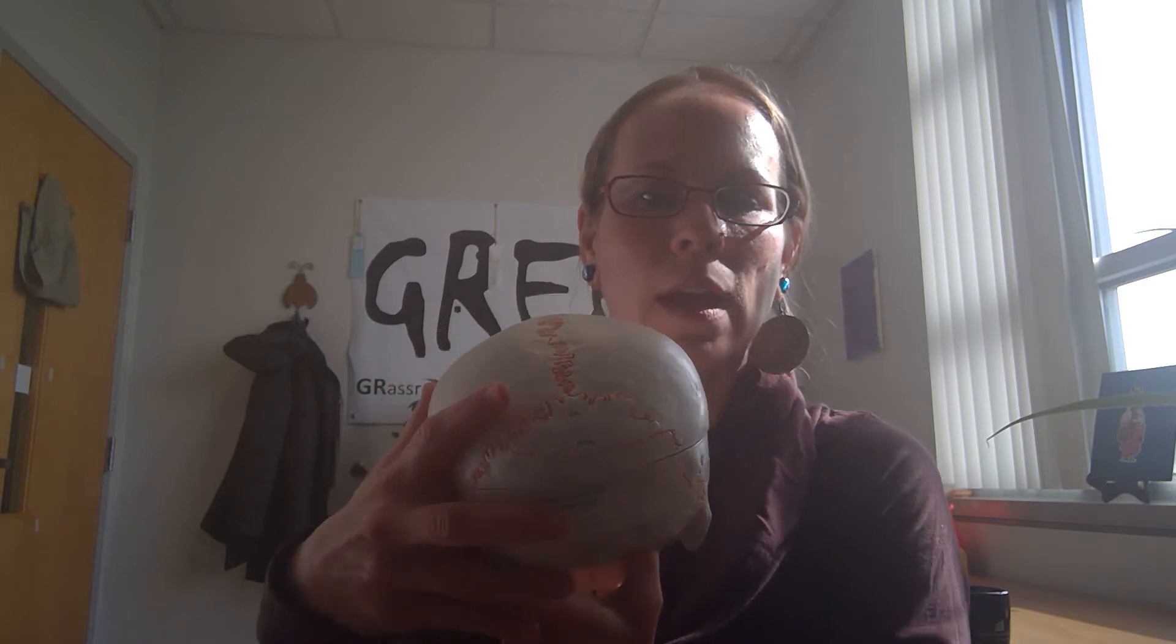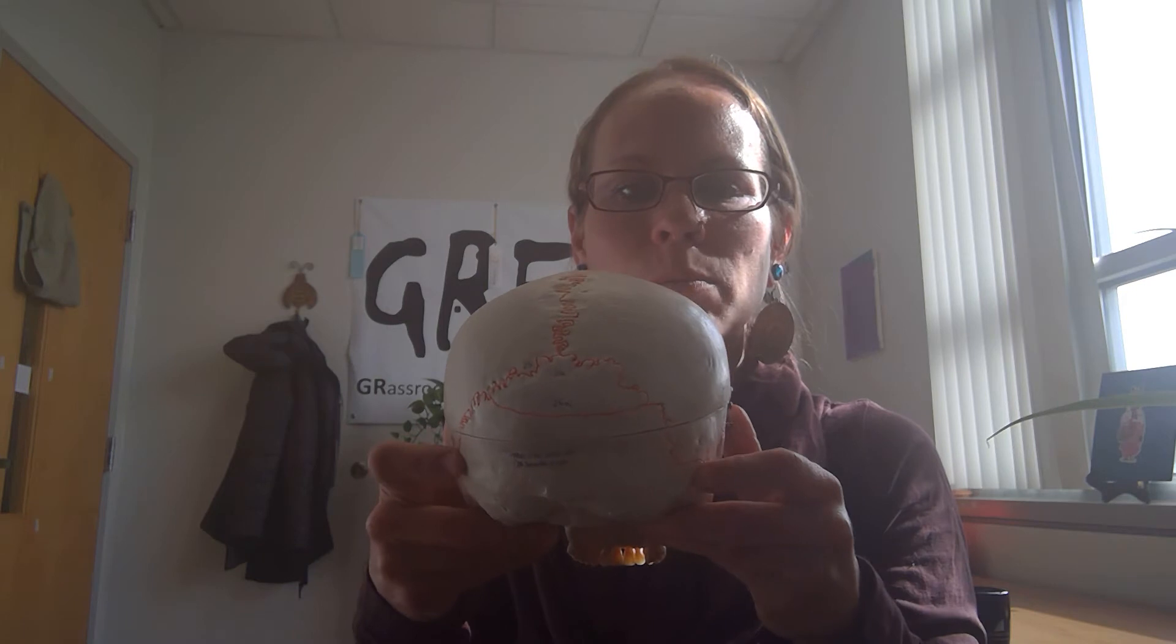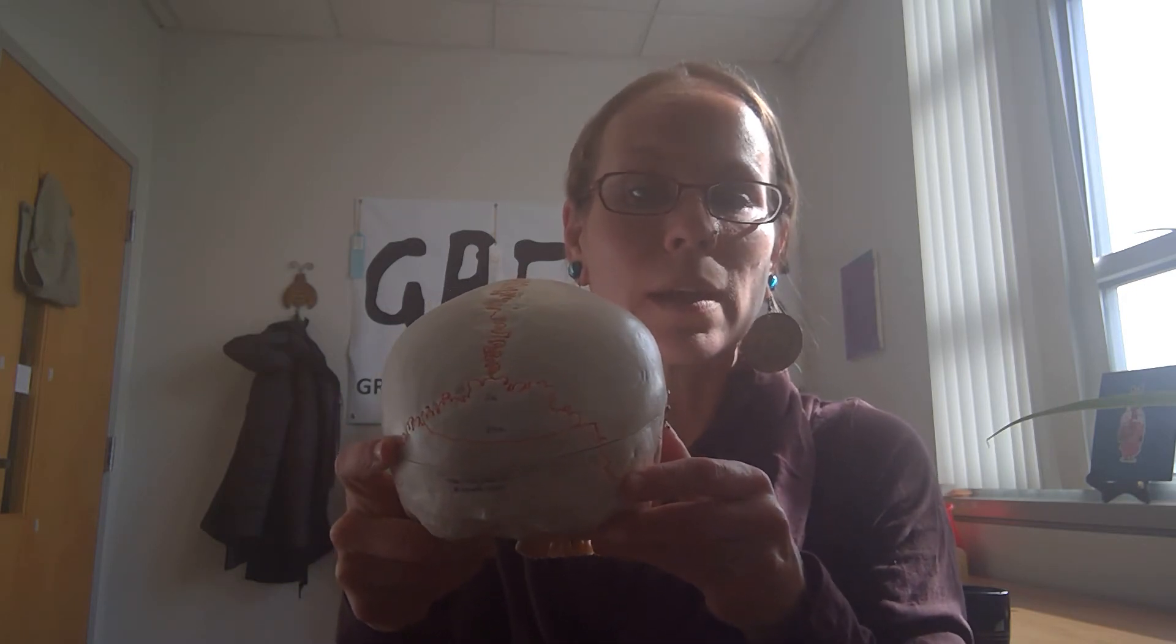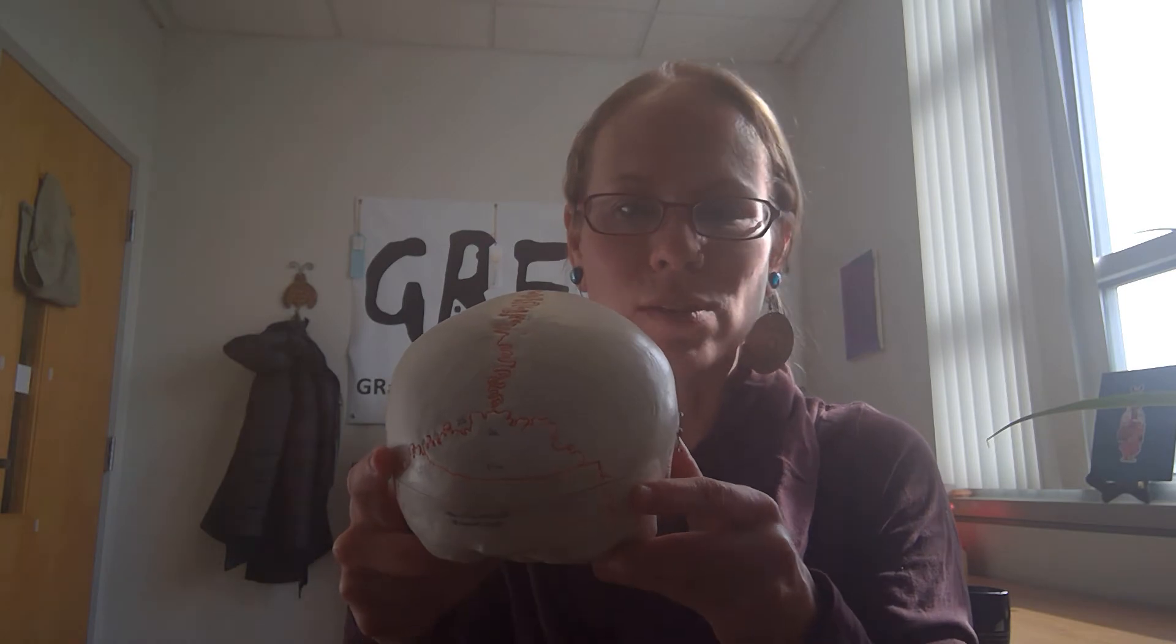You have a suture line at the back of the skull separating or joining the occipital bones with the parietal bones. This one looks sort of like an upside down V. That is the lamboid or lambdoidal suture.